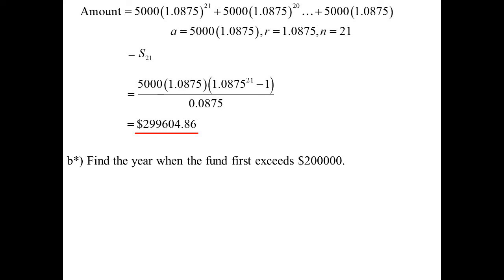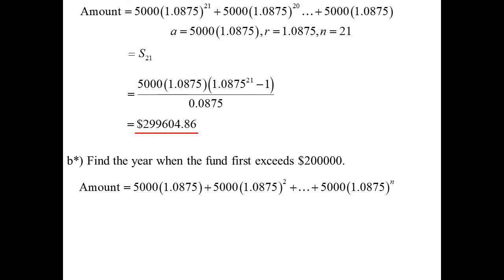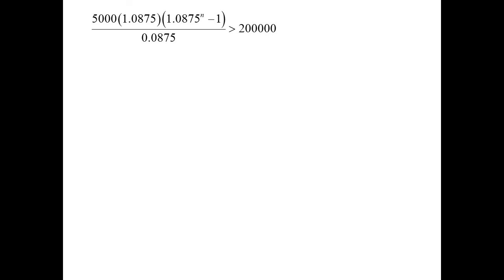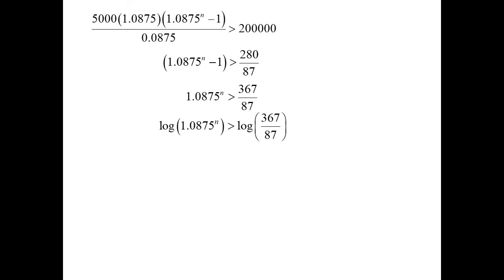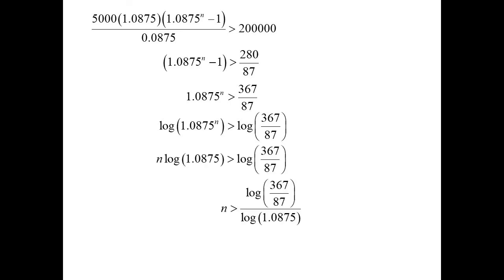There's an asterisk — this next question wasn't in the HSC, I've added it. Find the year when the fund first exceeds $200,000. It's essentially the same sum, just that we don't know what N is — that's what we're trying to find, with the sum greater than $200,000. Substituting into the formula and rearranging gives an exponential equation. Taking logs of both sides — log of a number bigger than one, so we don't change the sign — N is greater than 17.16. So N = 18, meaning it won't be until the 18th investment, which is 2021.